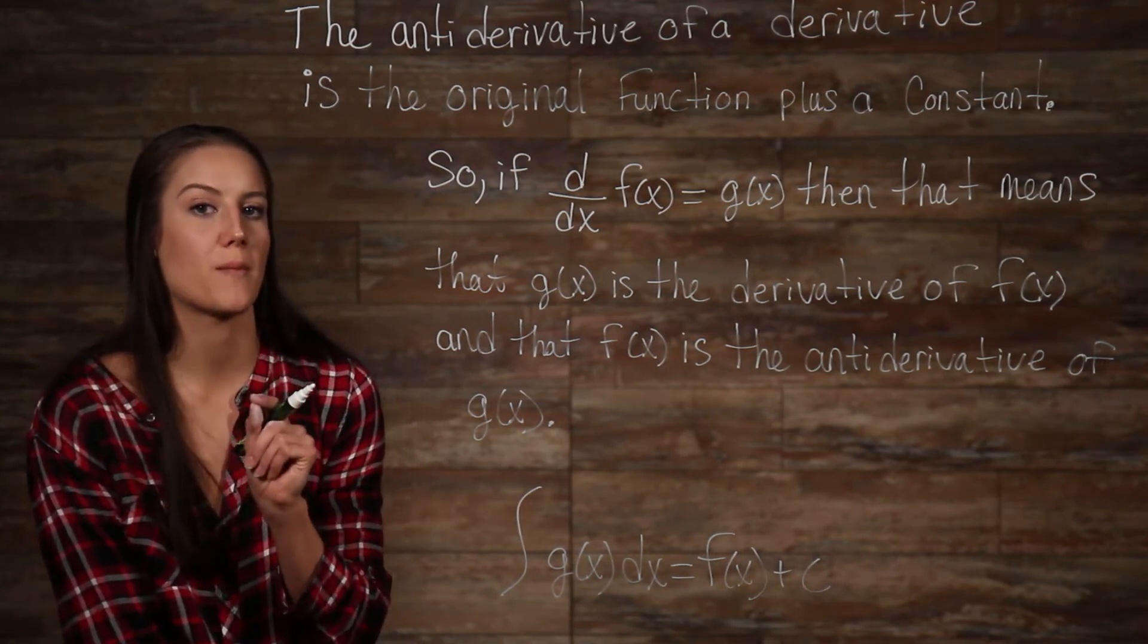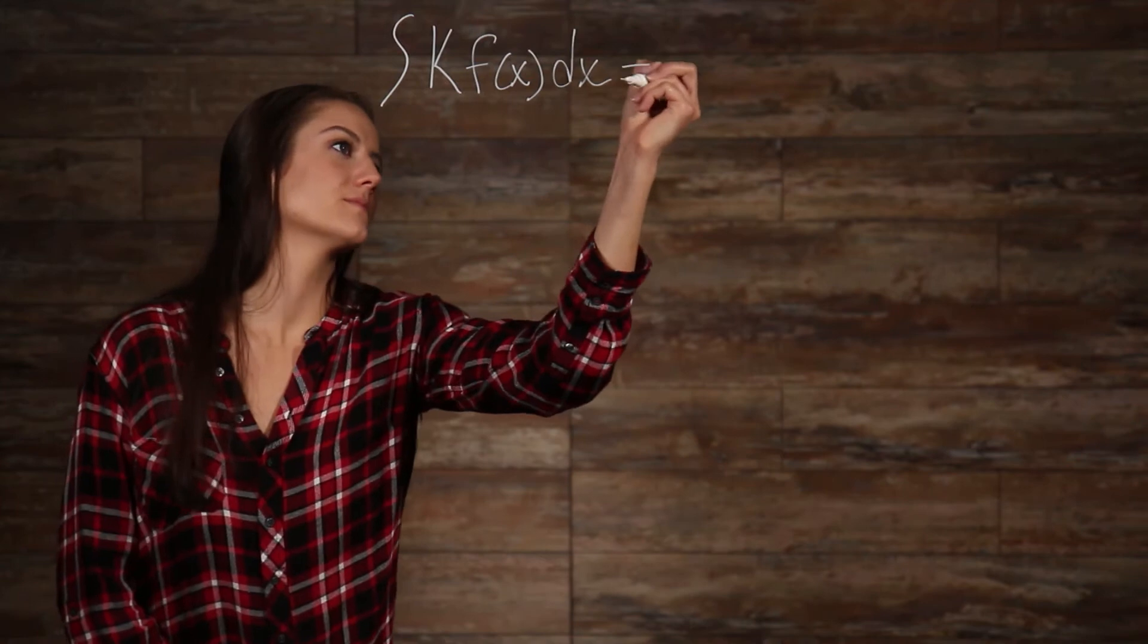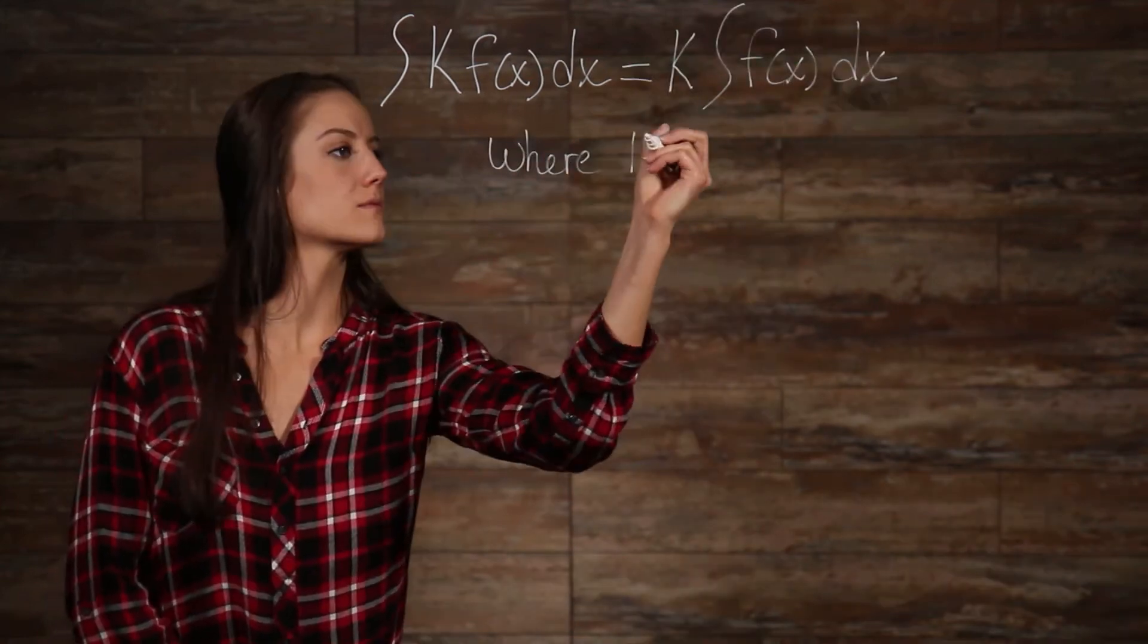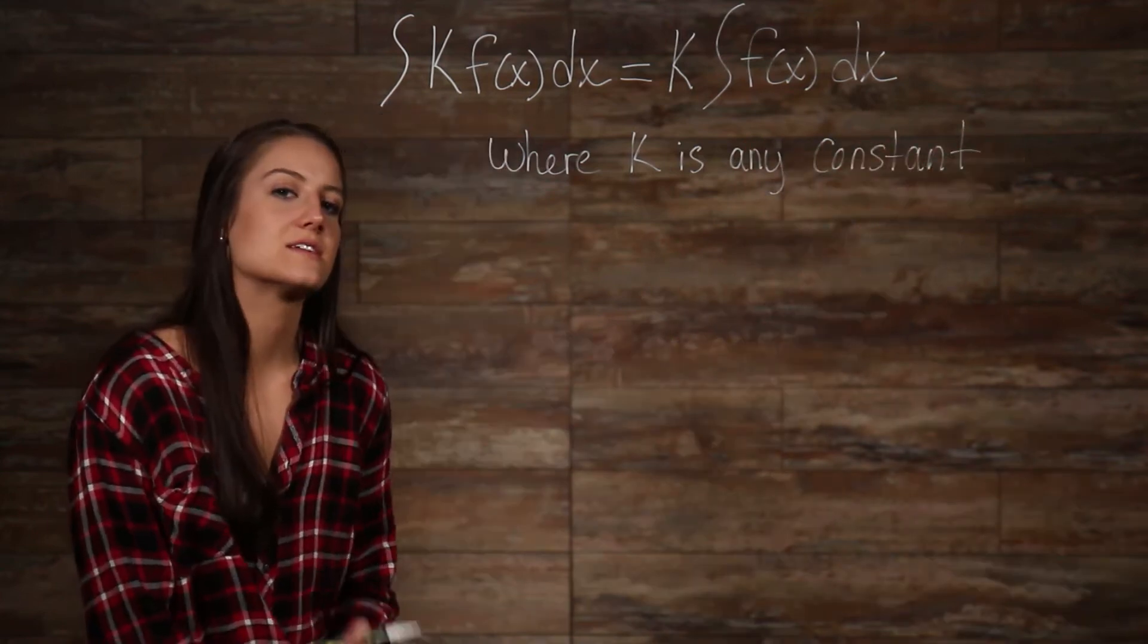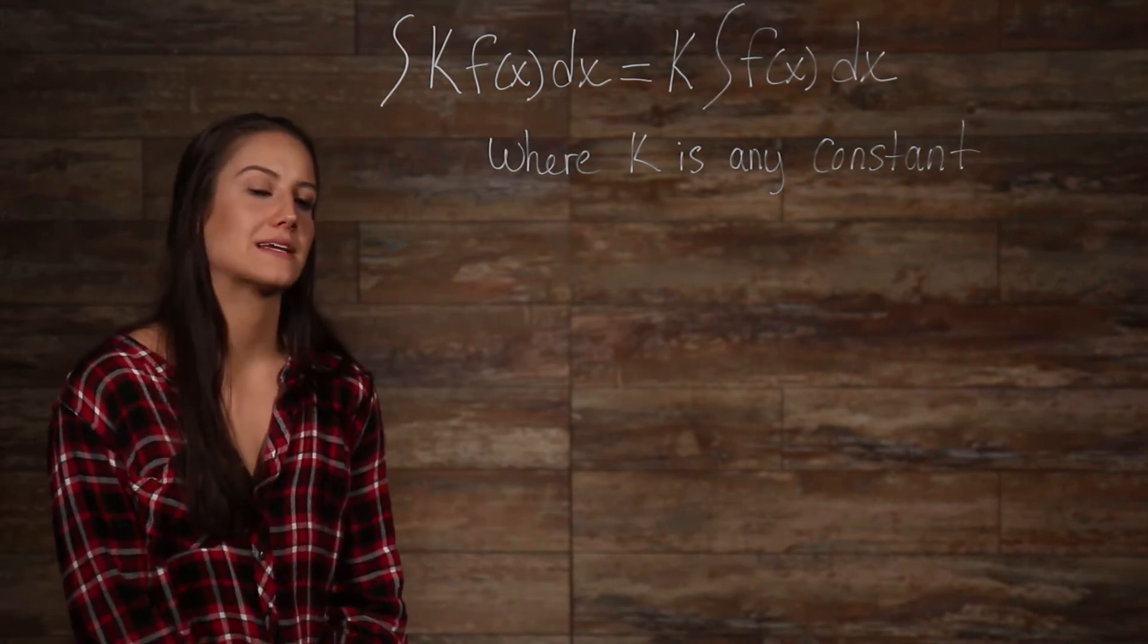Secondly, there are a few properties that you need to be aware of. Now, the first is... What this property tells us is that we can factor out any multiplicative constant.